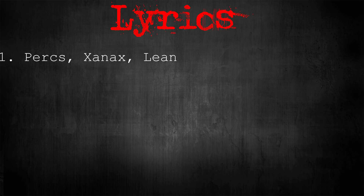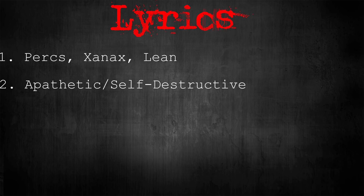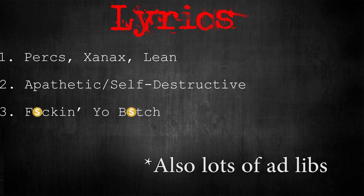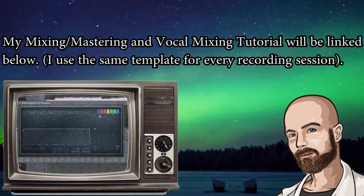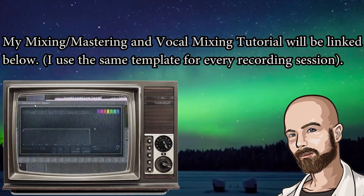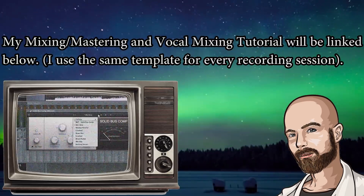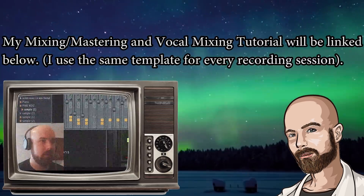Now it's time to write some lyrics. Ignorant trap songs tend to focus on: one, the use of perks, zans, or lean; two, a blasé attitude towards self-destructive behavior; and three, bragging about having intimate encounters with other people's girlfriends. My mixing, mastering, and vocal mixing process are the same as always — I'll link to those videos in the description section of this video.